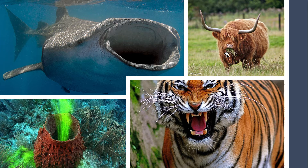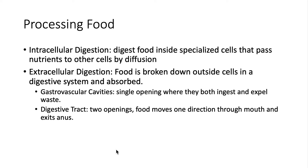You have an herbivore here eating grass, and carnivores here — notice the teeth. So, processing of food: since animals are not autotrophs, they are heterotrophs and need to consume another organism to get energy. Consuming the food is part of the battle, and that part is called ingestion. Now we're going to be talking about digestion. You have two types: intracellular, meaning inside, and extracellular, being outside. Intracellular is digested food inside special cells that pass nutrients to other cells by diffusion.